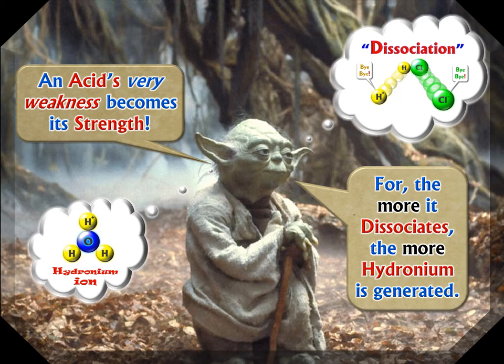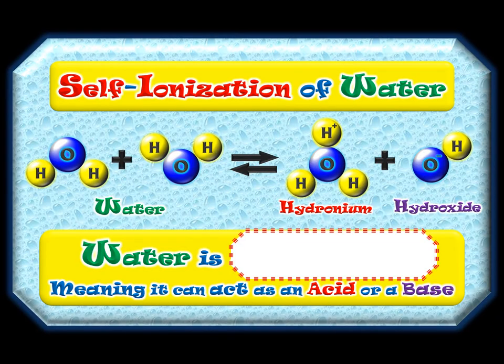Why do acids do all the things they do? Hydronium. When it comes to water, that's a little tricky, because water kind of does both — water makes hydronium, and water makes hydroxide when it self-ionizes.